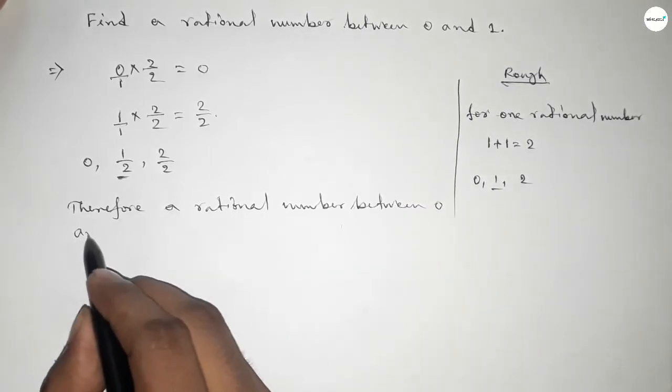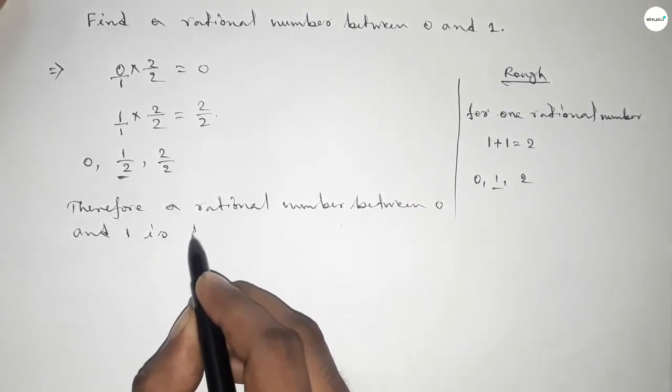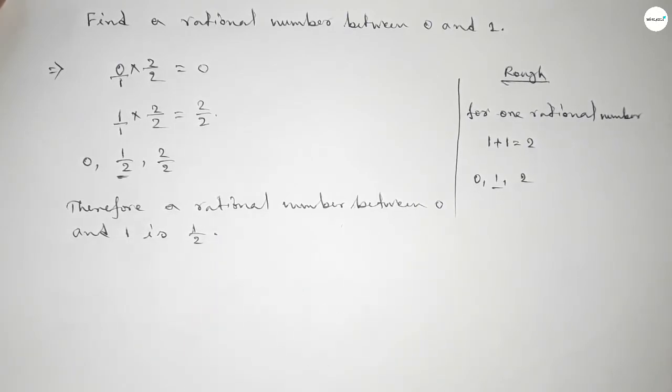So this is the process to find out a rational number between 0 to 1. Thanks for watching.